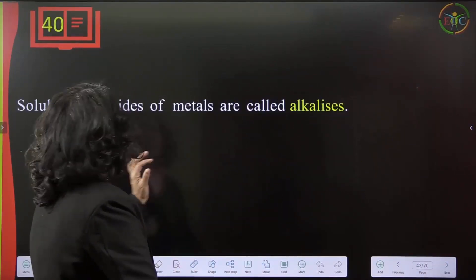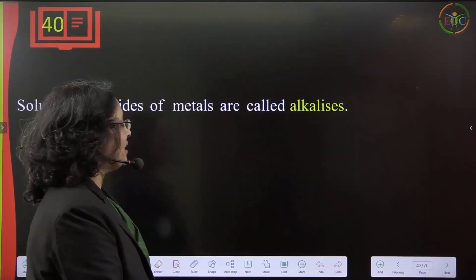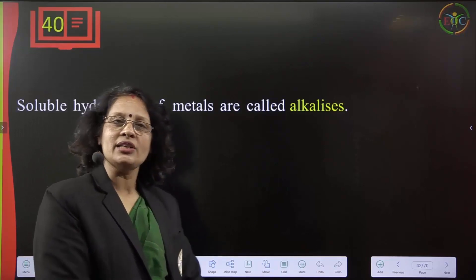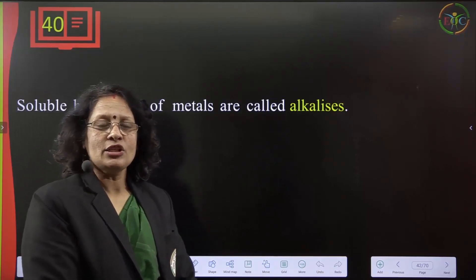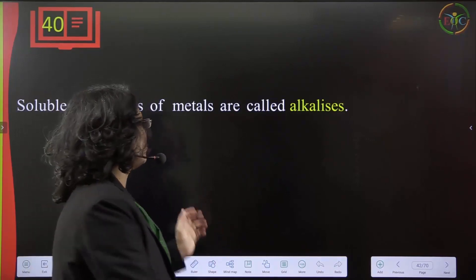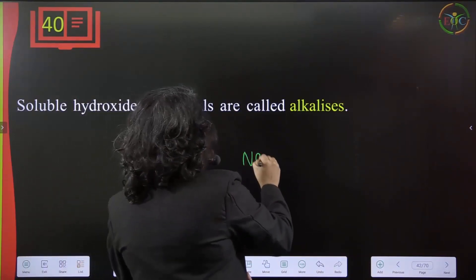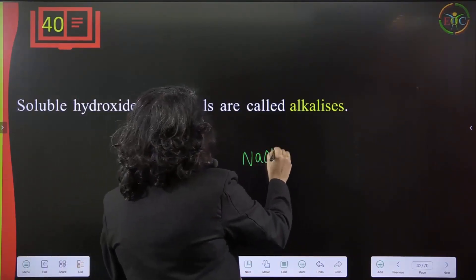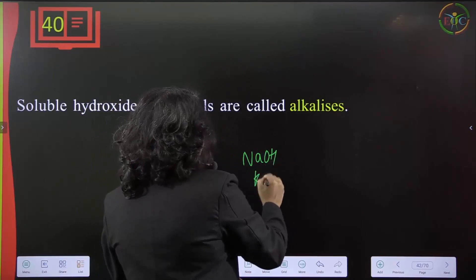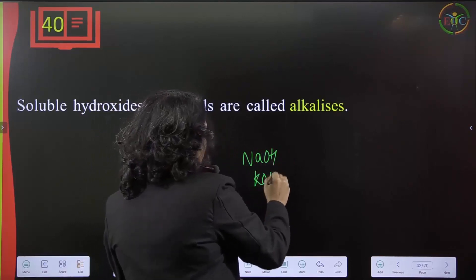Soluble hydroxides of metals are called alkalies. So NaOH and KOH are soluble and are therefore called alkalies.